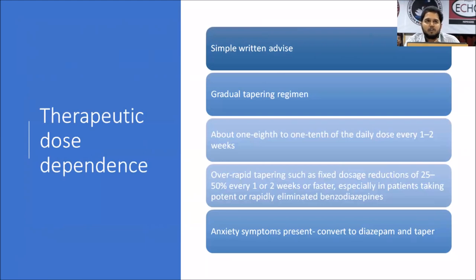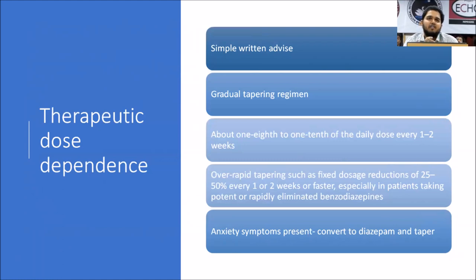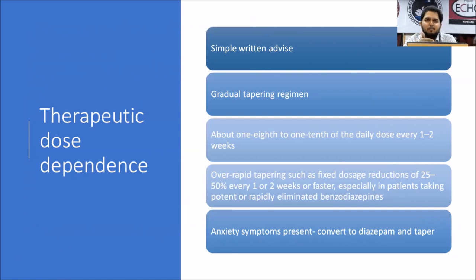For therapeutic dose dependence — for example, a patient on 2 mg of clonazepam long-term — studies in 200–400 patients show that simple written advice to stop or taper benzodiazepines led to more than 50% of patients stopping use. Gradual tapering regimens are also effective. In therapeutic dose dependence, literature does not require switching to diazepam; the same agent can be tapered by one-eighth to one-tenth of the daily dose every one to two weeks.